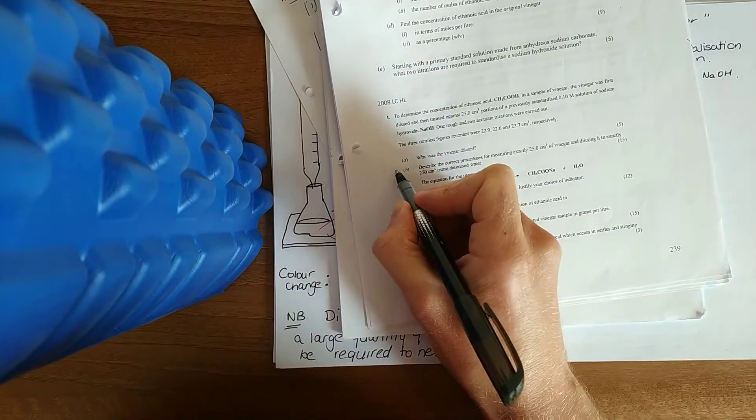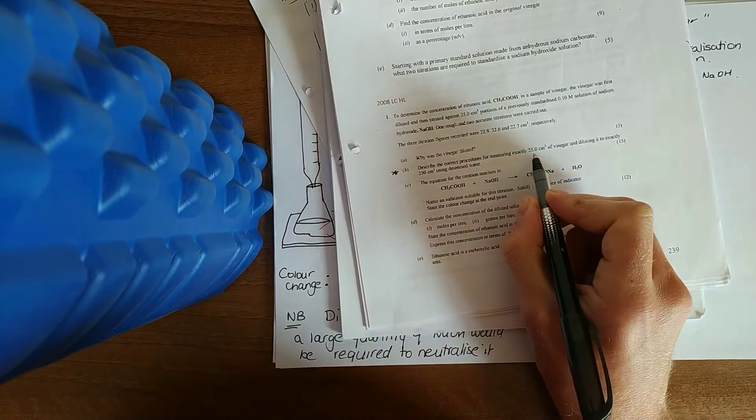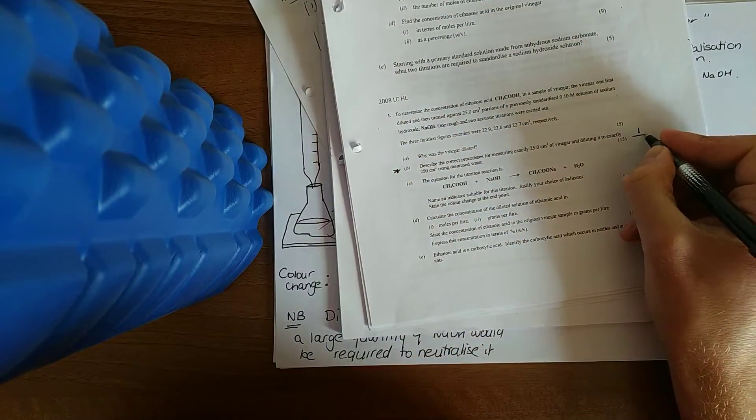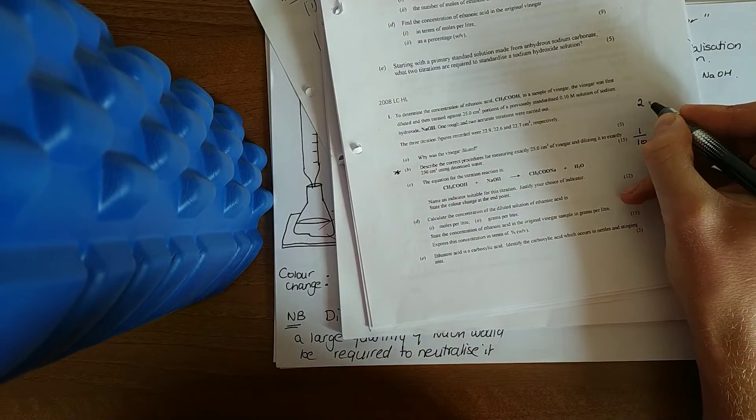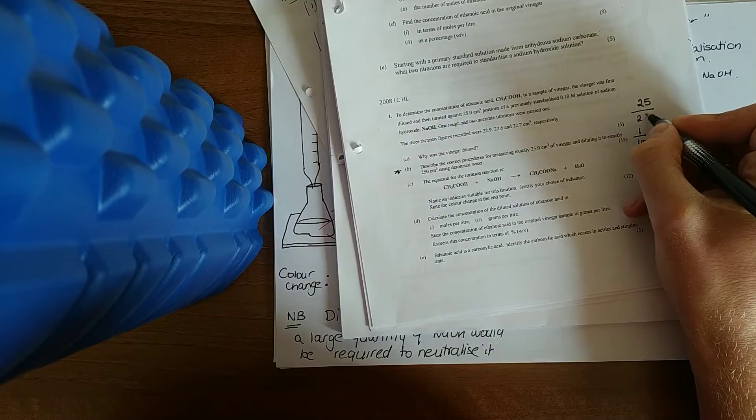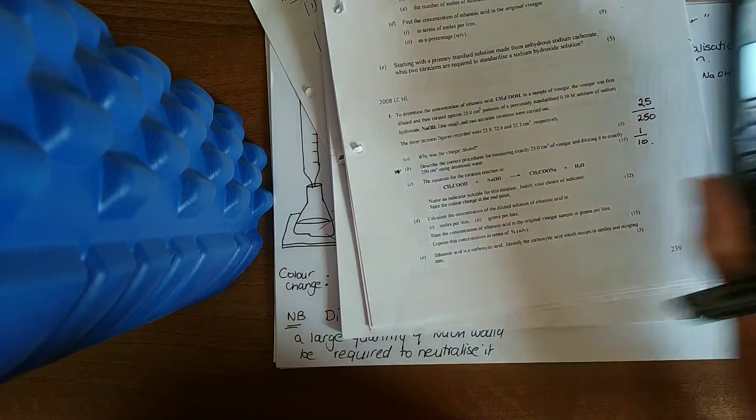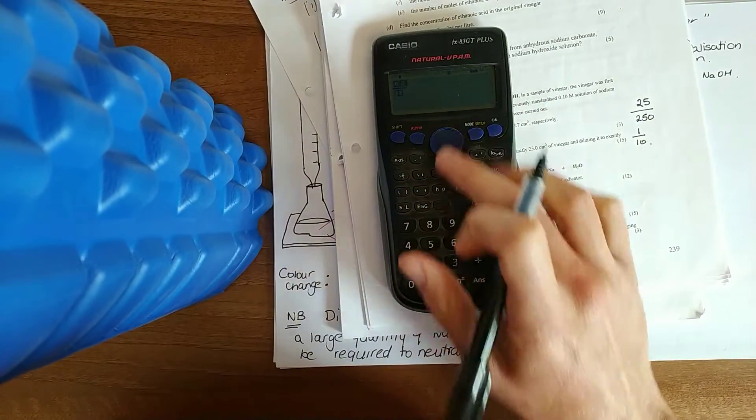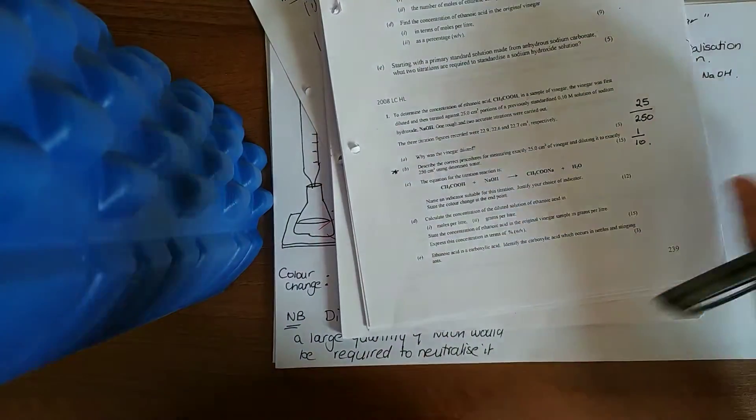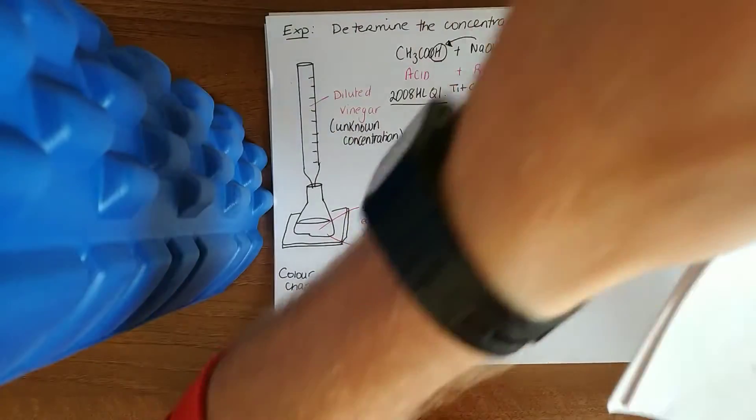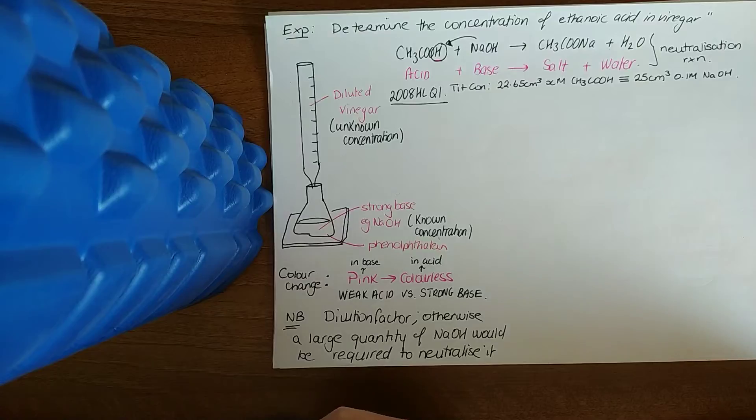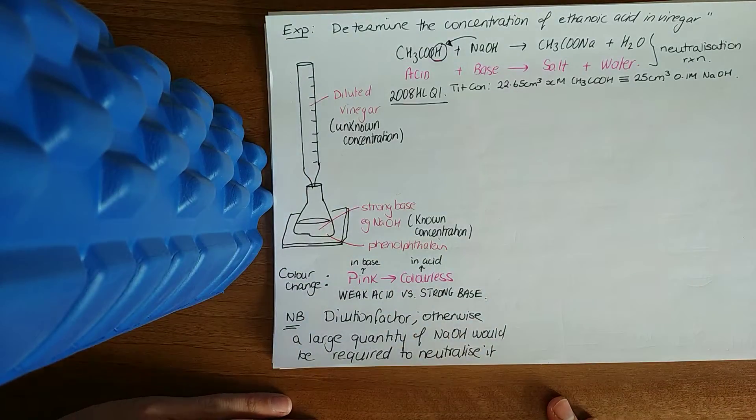Have a look at the dilution factor now. In part B, the dilution factor for measuring exactly 25 centimeters cubed of vinegar and diluting it to 250 is one in ten. If you're unsure how you get that, 25 in 250 gives you a one in ten dilution. Otherwise an excessive amount of reagents would be required.